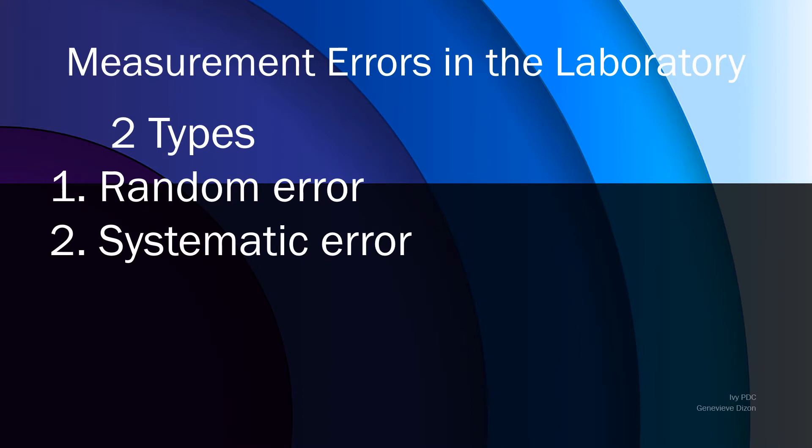The two types of analytical errors in the laboratory are either random error or systematic error, and both of these types of error affect the system's accuracy.